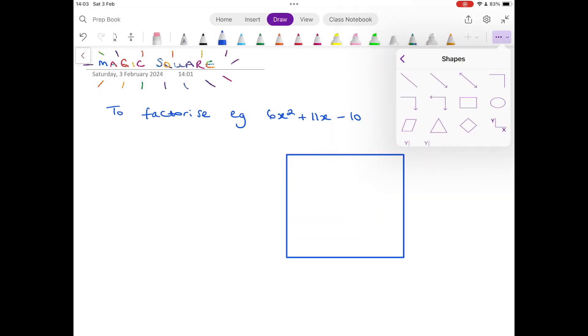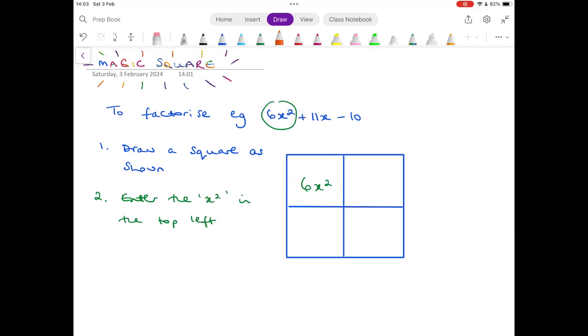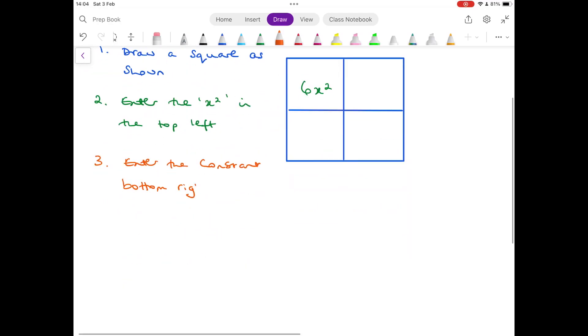So first we'll draw a square and divide it into four smaller squares as shown. The first step is to draw the square, second step enter the x squared term in the top left. Step 3, enter the constant term, that's minus 10, in the bottom right.